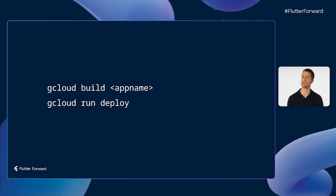If containerized applications sounds scary, take a deep breath, because the startup project we generated earlier includes a special file called a Dockerfile that handles all that containerization for us and can get us deployed to Cloud Run in minutes. Once you've created a project within Google Cloud and installed the gcloud CLI locally, run these two commands to deploy your server. It'll now be accessible at the public URL shown in the Google Cloud console.